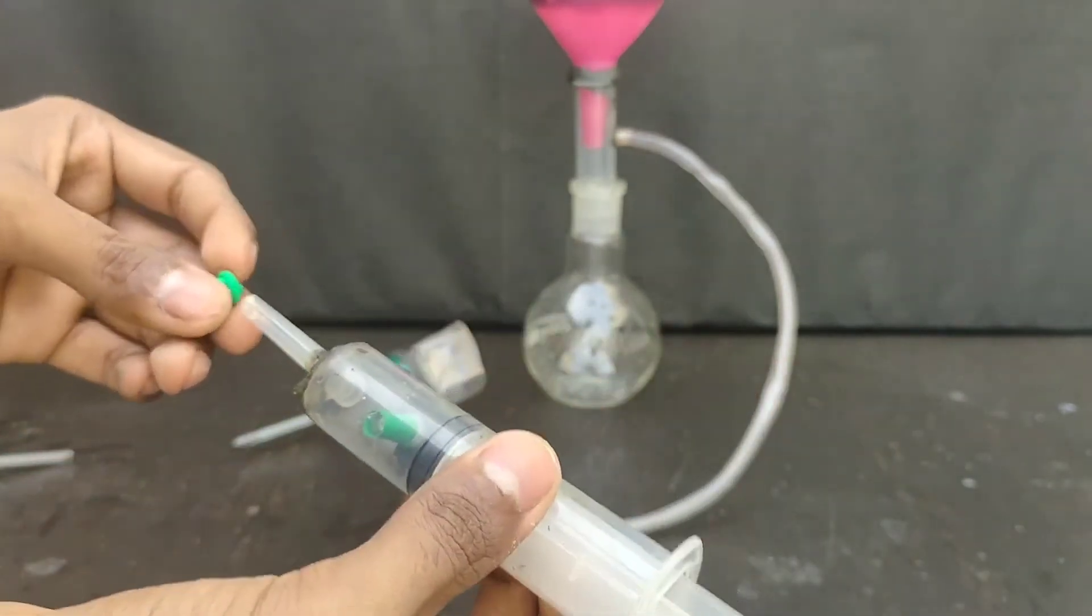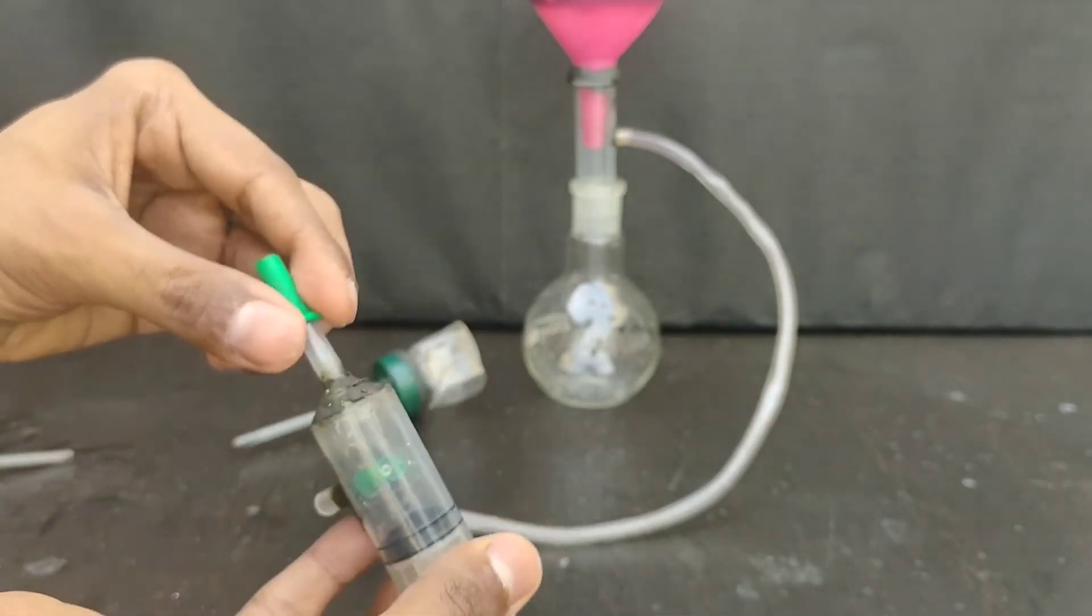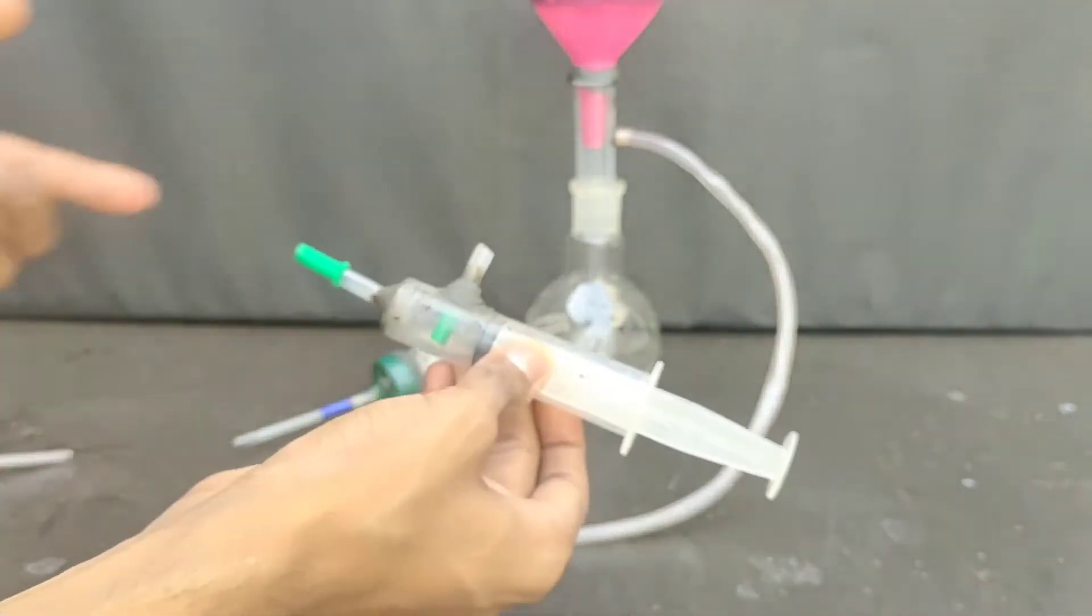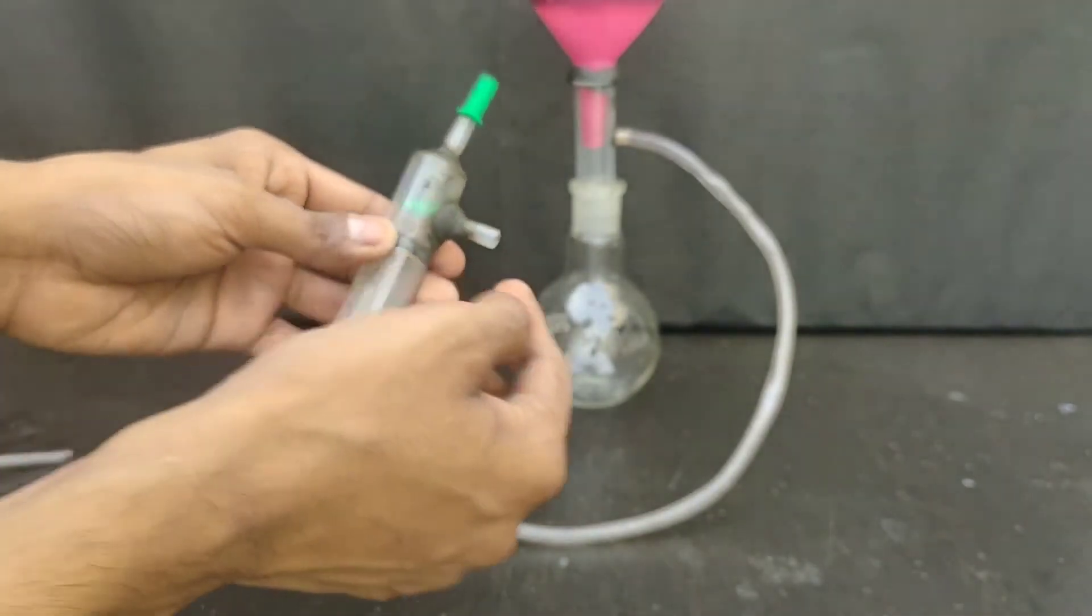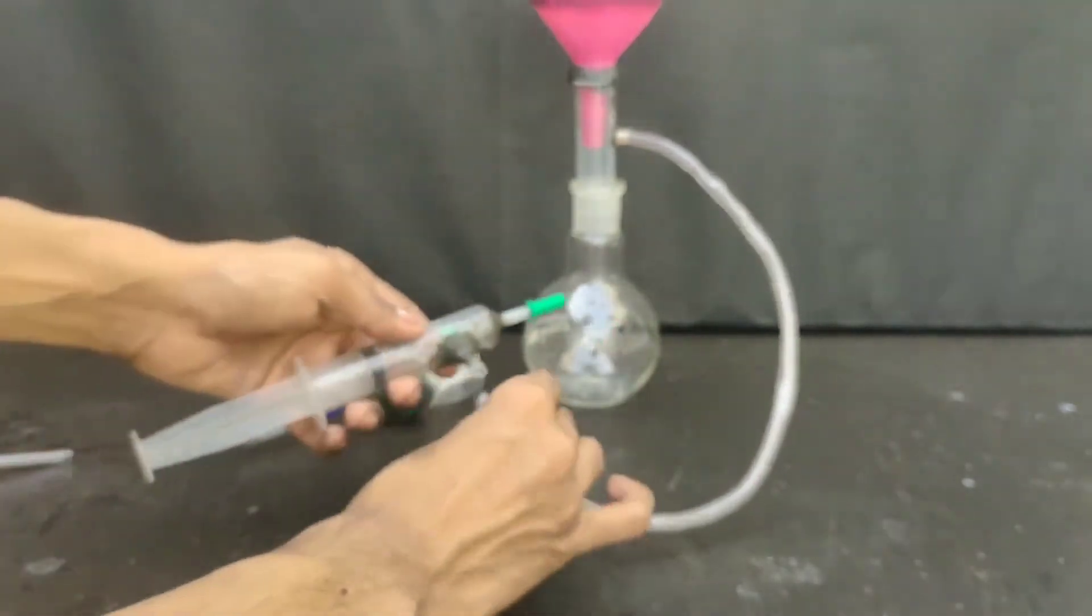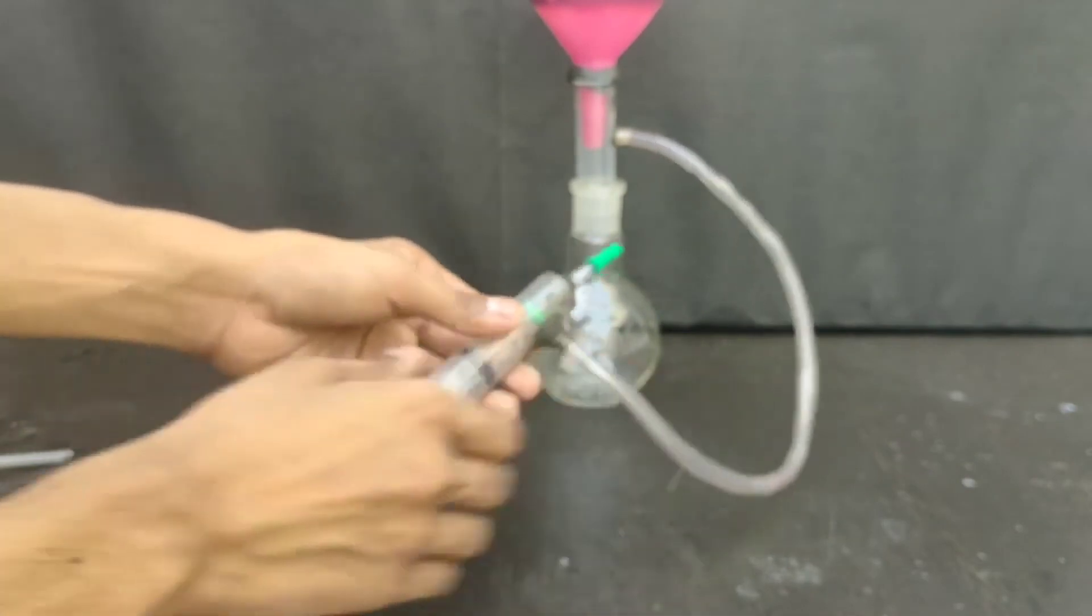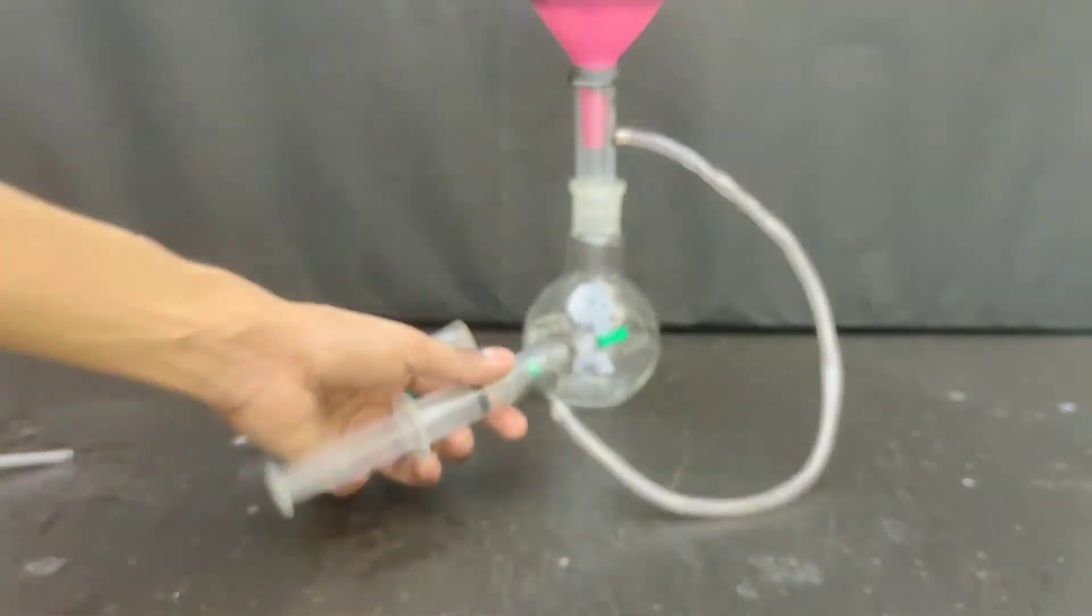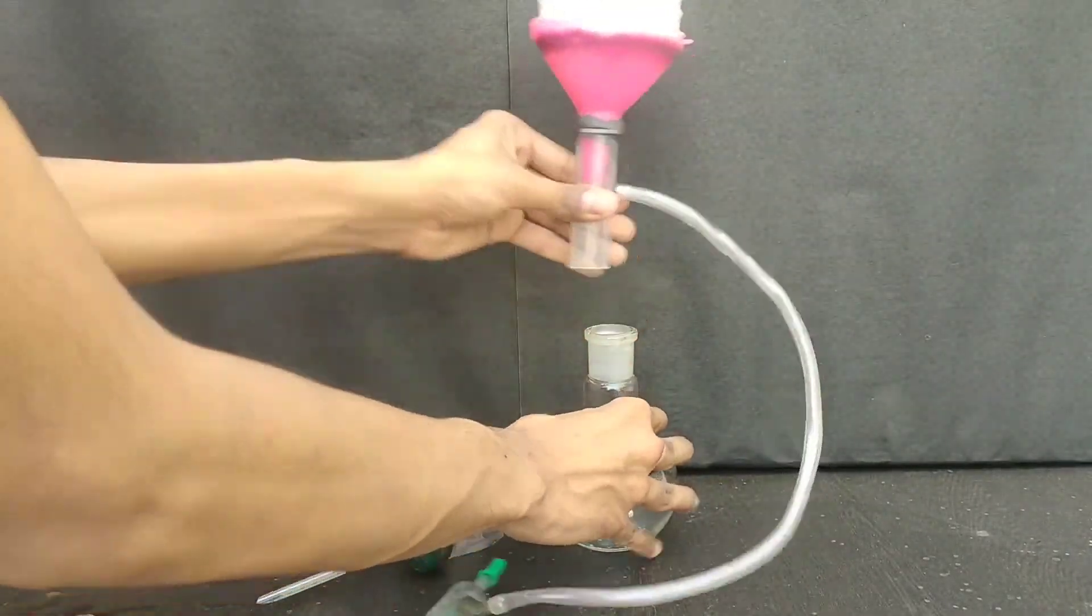which is used as a valve. Now air can come out of this but cannot enter. Same valve I have placed over here in this direction. It is manually pumped like this. You can see, now I will connect this tube into this pipe and then I can use my vacuum filtration.